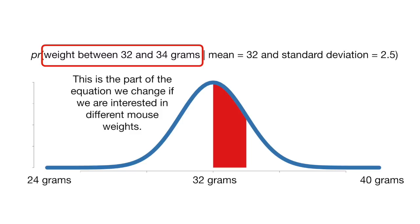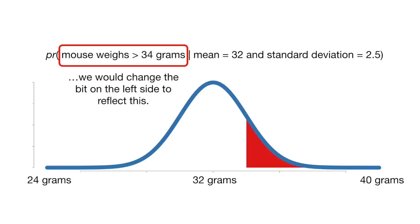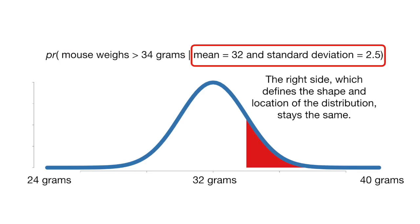This is the part of the equation we change if we are interested in different mouse weights. For example, if we wanted to know the probability of a mouse weighing more than 34 grams, we would change the bit on the left side to reflect this. The right side, which defines the shape and location of the distribution, stays the same.